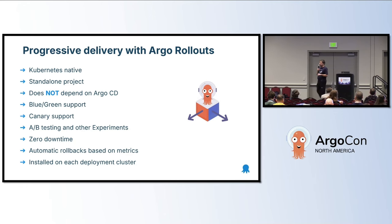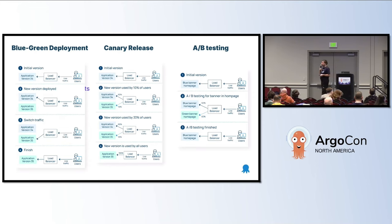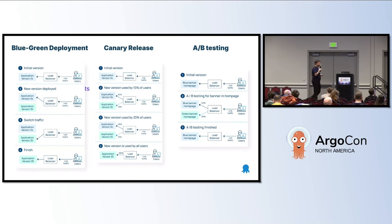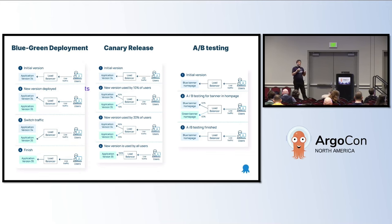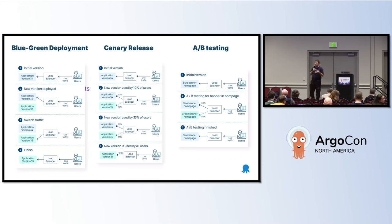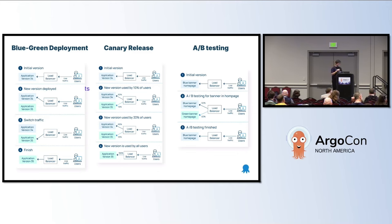Unlike Argo CD, you need to install Argo Rollouts per cluster — that's how it works. What you can do with Argo Rollouts is progressive delivery. In the context of this presentation, progressive delivery means blue-green deployments, where you have a release running with users, you start a new version without any traffic, run some tests or look at metrics, and then redirect the traffic when you are happy. Canary releases are similar, but instead of switching just once, you have a gradual way of moving traffic — starting with 10%, 20%, 30%, and so on. You can also do A/B testing, which we won't cover today.